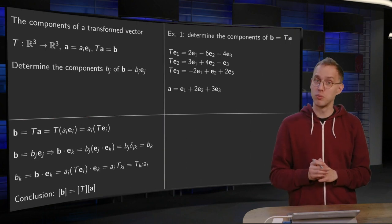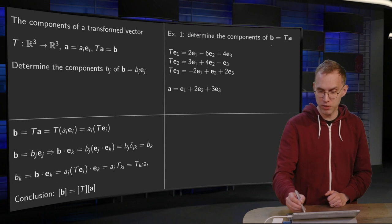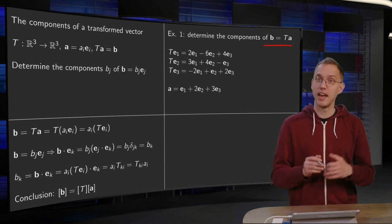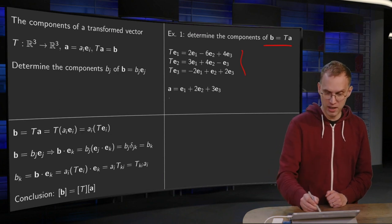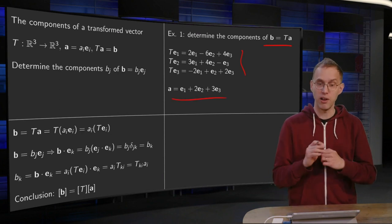So let's do a small example. Determine the components B equals T of A in a specific case, where the T is given over here, and A is some vector given over here. So how does it work?